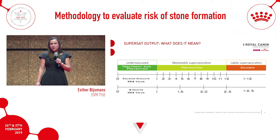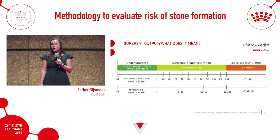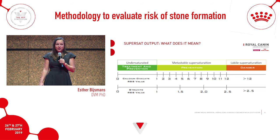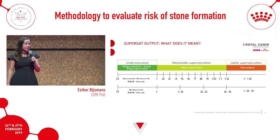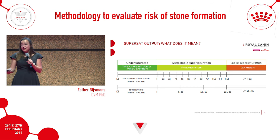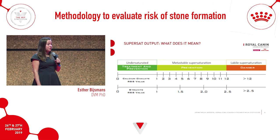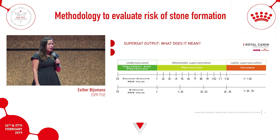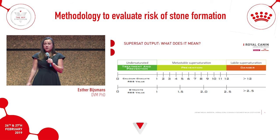On this graph you can see the three zones again. The under-saturated zone is the treatment and prevention zone. The metastable super-saturation zone in the middle is the prevention zone - a stone will likely not form there. Then the danger zone, the labile super-saturation zone. For calcium oxalate and struvite, the RSS output values for these zones differ: both are under-saturated below one, but the danger zone for calcium oxalate starts at 12, while for struvite it starts at 2.5.